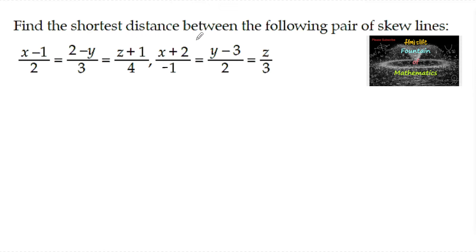Find the shortest distance between the following pair of skew lines: (x−1)/2 = (2−y)/3 = (z+1)/4 and (x+2)/(−1) = (y−3)/2 = z/3.